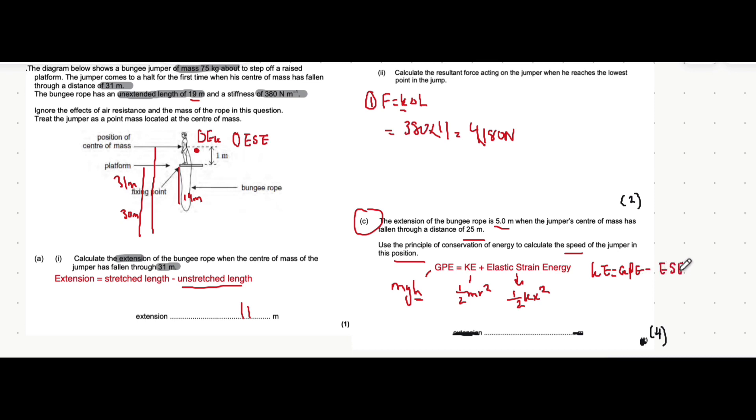The reason we can definitely say this is true is because we're assuming that the decrease in gravitational potential energy turns into kinetic energy as the person speeds up going downwards, but also it turns into elastic strain energy because the wire ends up being extended.